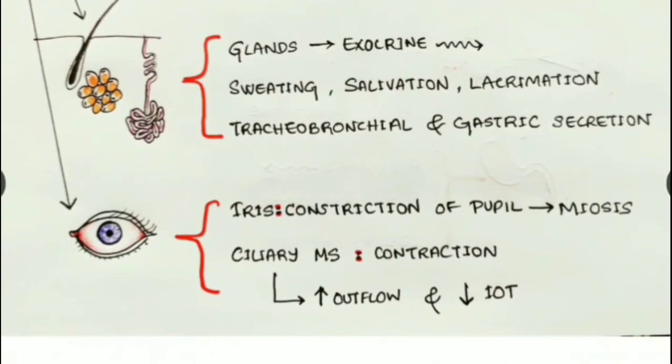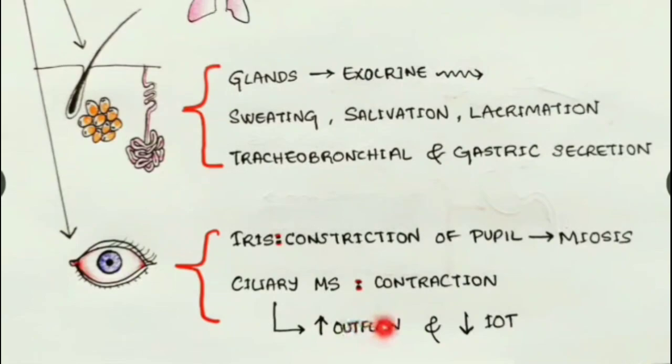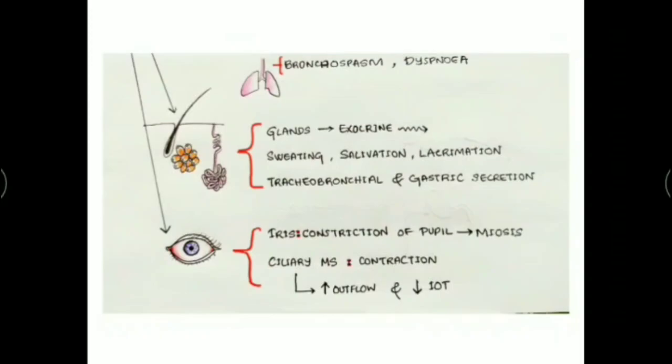In the eye, M3 receptors are located at the iris and the ciliary muscles. Stimulating M3 receptors in the iris causes constriction of the pupil, which is called miosis. Stimulating M3 receptors in the ciliary muscles causes contraction, which increases outflow of aqueous humor, thereby decreasing intraocular tension.